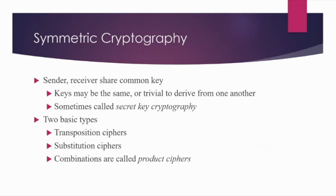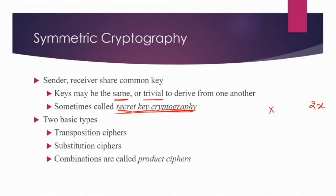Since sender and receiver share the common key, the key may either be the same or previously derived from each other. For example, one side encrypts using key X, and the other decrypts using 2X — they are linearly dependent and can be derived from one another. It is also known as secret key cryptography because we have to keep this key quite secret, as the entire security of the system relies on the secrecy of this secret key.